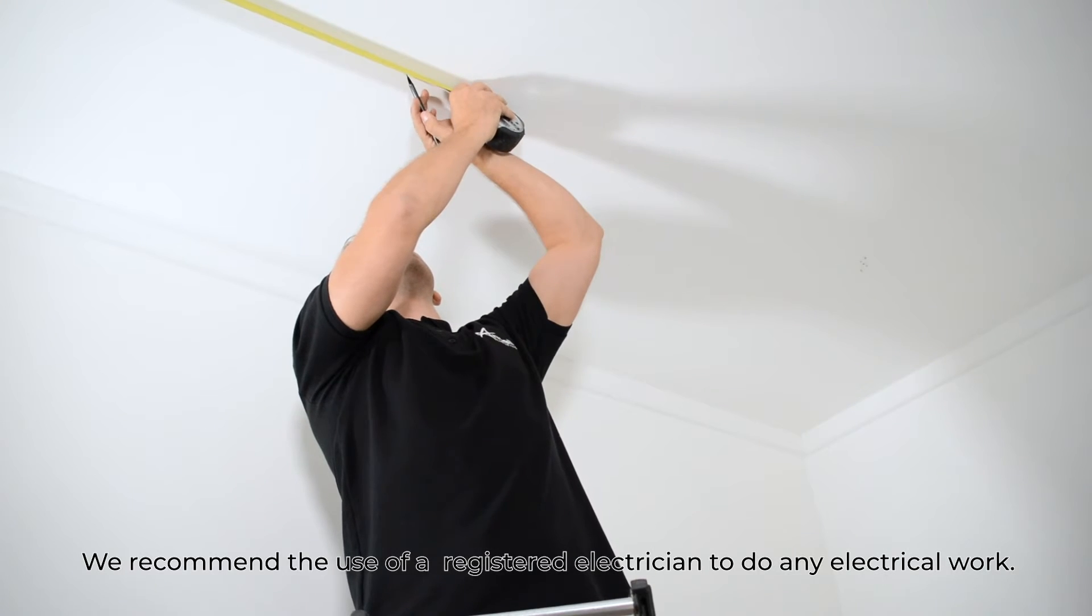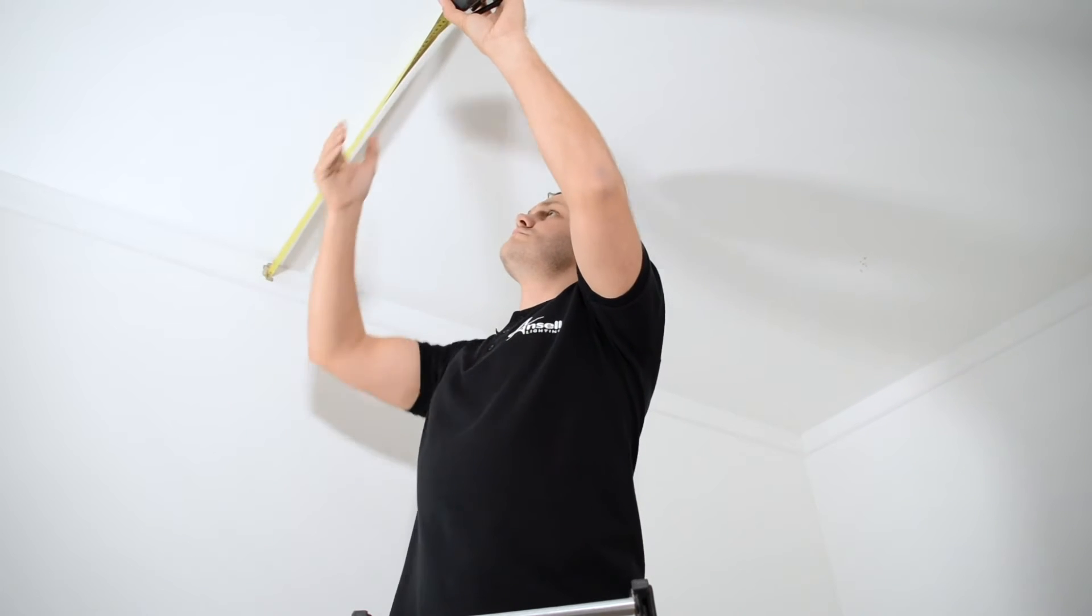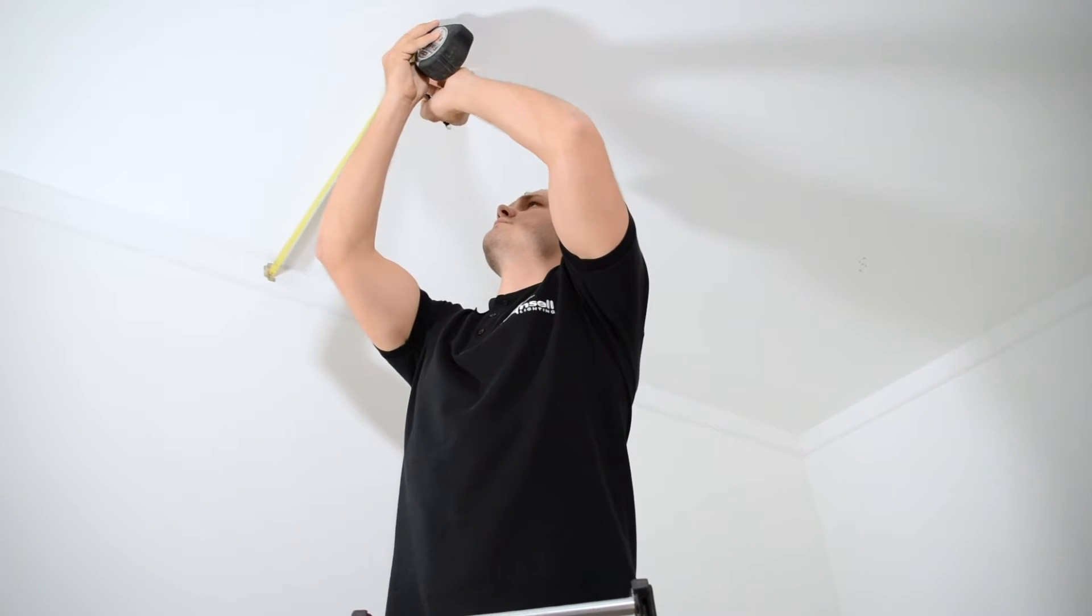Step 1: Decide where you would like to place your Topline LED baton, then measure out the ceiling. Mark the central point of the fitting and the fixing points.